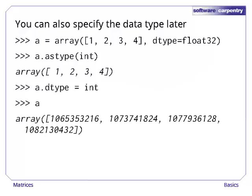You can also choose a data type later using array's astype method. Please do not simply assign a type to the array's dtype unless you are really, really sure you know what you are doing. This causes NumPy to reinterpret the bits in the array according to the new data type, which is almost never what you want.